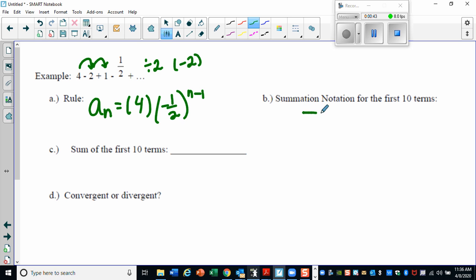The summation notation for the first 10 terms: your sigma n equals one, because that's my first term all the way up to my 10th term. Then you're just going to include your rule in there.